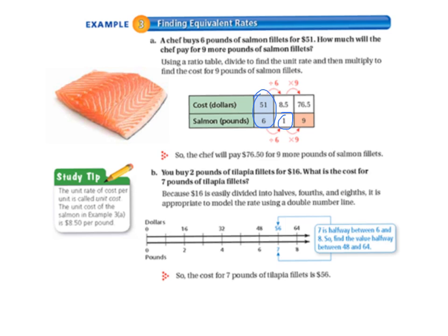And then we know that we want to buy 9 pounds of it. So we take 1, and we multiply that by 9 to get 9 pounds on the bottom. And then we take 8.5, and we multiply that by 9, and we get $76.50. So the chef will pay $76.50 for 9 more pounds of salmon fillets.